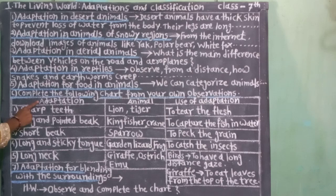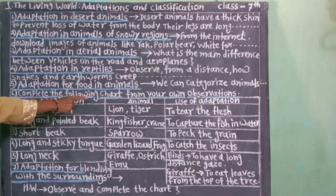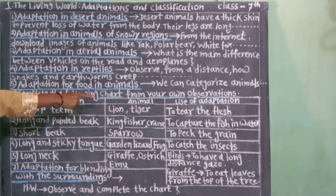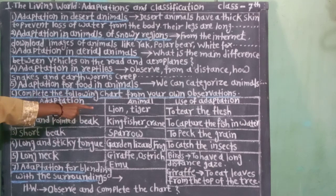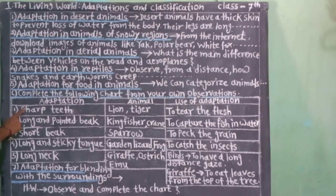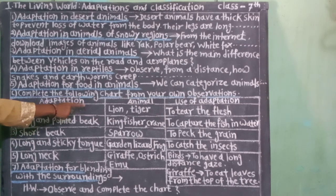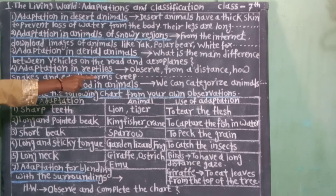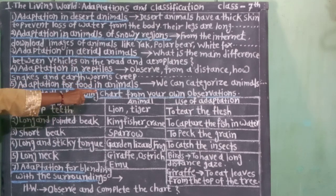Adaptation means जालेले अनुकुलन. Animal means प्राणी. Use of adaptation means अनुकुलनाचा उपयोग. Sharp teeth means तिक्ष्ण सुळे. जालेले अनुकुलन: तिक्ष्ण सुळे. प्राणी: सिंह, वाघ. अनुकुलनाचा उपयोग: मास फाडून खाण्यासाठी.